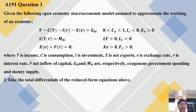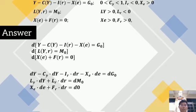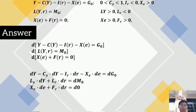Part 1 asks us to take the total differential of the reduced form equations. First, we rewrite the whole equation so it becomes: dY minus C subscript Y times dY minus I subscript R times dR minus X subscript E times dE equals dG subscript 0. The second equation is L subscript Y times dY plus L subscript R times dR equals dM subscript 0. The third equation is X subscript E times dE plus F subscript R times dR equals d0.